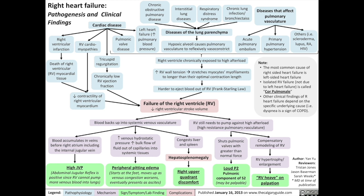The other main cause of the clinical findings of right heart failure is that the right ventricle still needs to pump against high resistance or high afterload. High resistance in the pulmonary vasculature will shut the pulmonic valves with greater than normal force, resulting in a loud P2 component of the second heart sound. This loud pulmonic component may also be palpable on examination. High resistance in the pulmonary vasculature will also lead to compensatory remodeling of the right ventricle, resulting in right ventricular hypertrophy or enlargement that presents as an RV heave on palpation of the precordium.